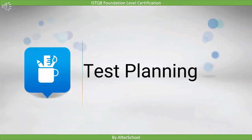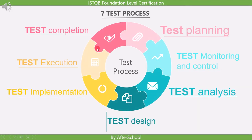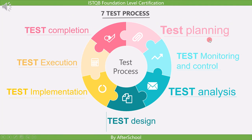Let's start with the first activity of the test process, that is, test planning. We know by now these are the 7 test processes: test planning, test monitoring and control, test analysis, test design, test implementation, test execution, and test completion. So let's understand what test planning is and what are the different tasks done under it.